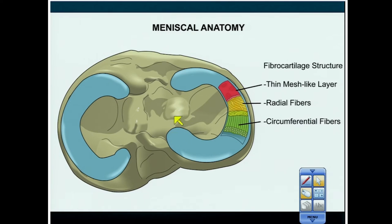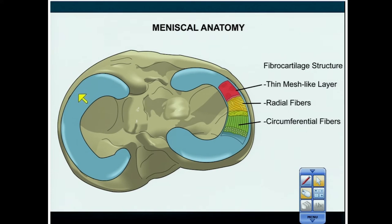The menisci are attached by roots — there's a front root and a back root — and also attached peripherally by the capsule, some tighter than others. The medial side has a tighter attachment than the lateral side, which is why it's more prone to certain types of meniscus capsular injury. The same rules apply: a third, a third, and a third for anterior horn, body, and posterior horn.